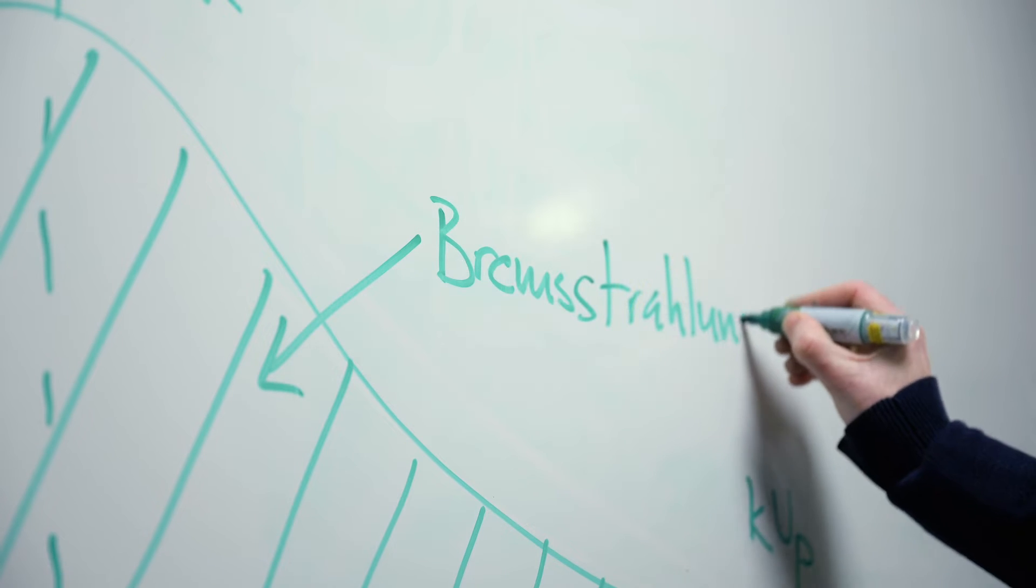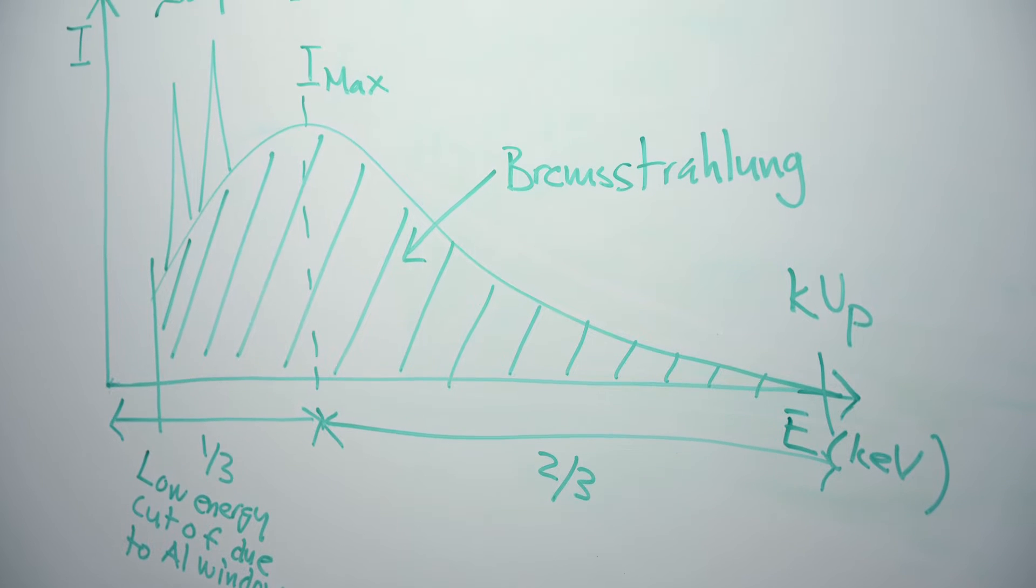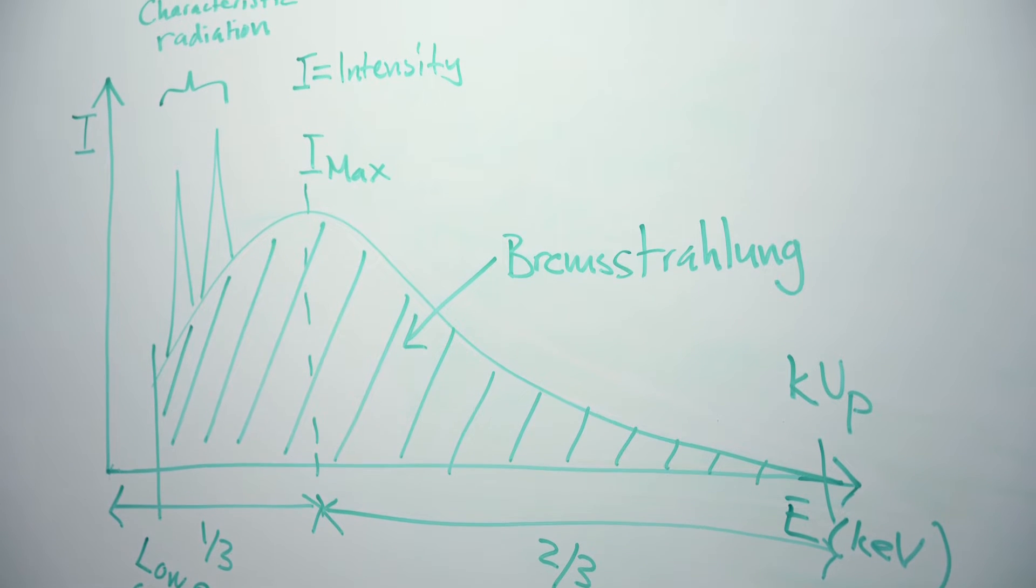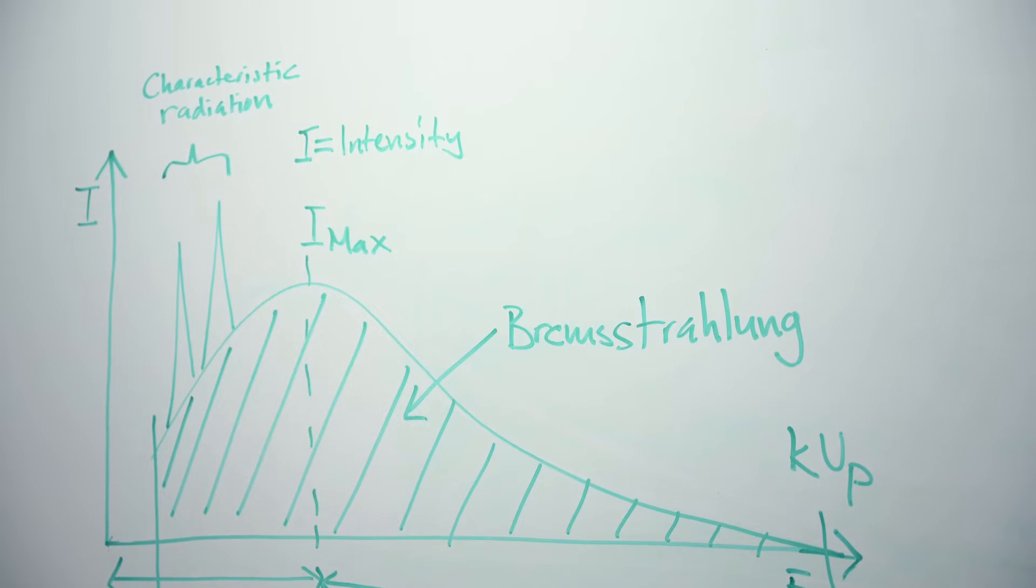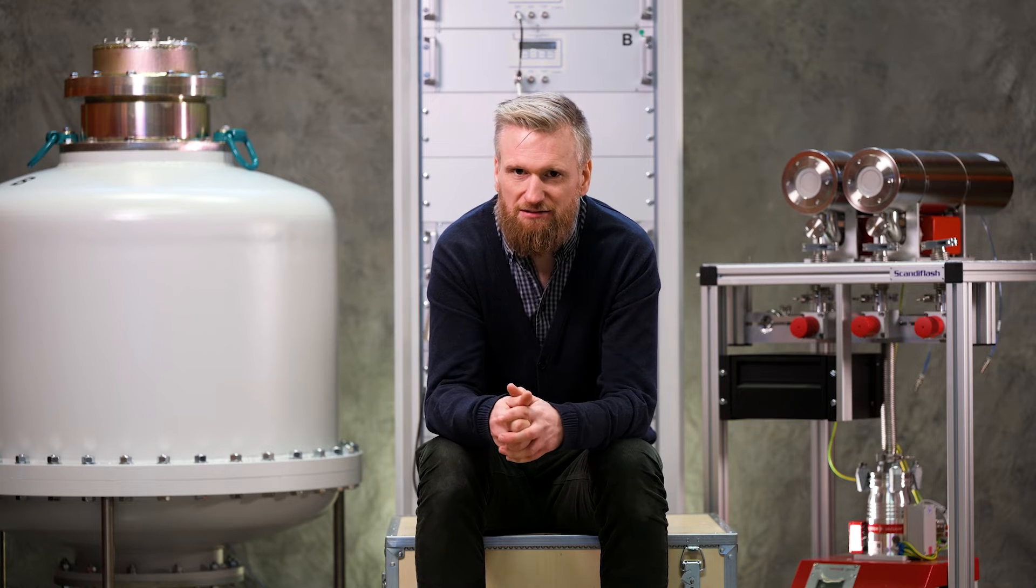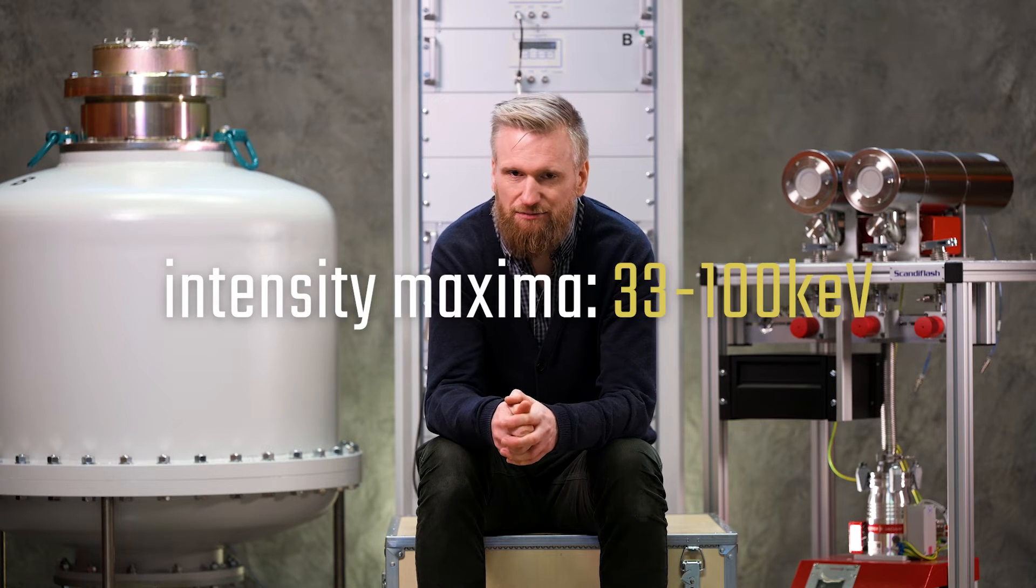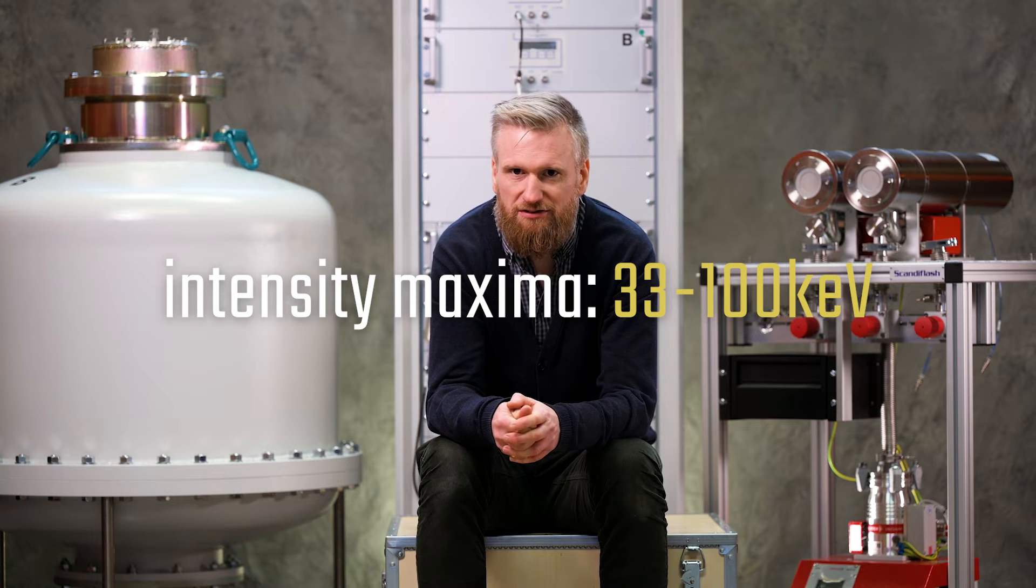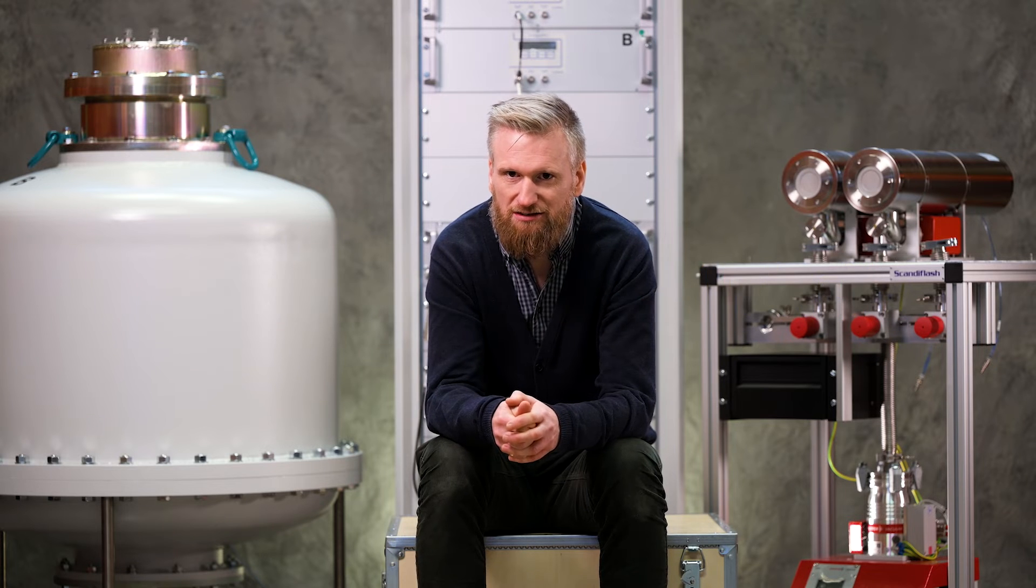So we are able to vary the energy output between 100 and 300 kW. That means that we can fine-tune the intensity maxima to be in the order of 33 to 100 kW. And that's ideal for capturing objects contained in aluminum, for example.